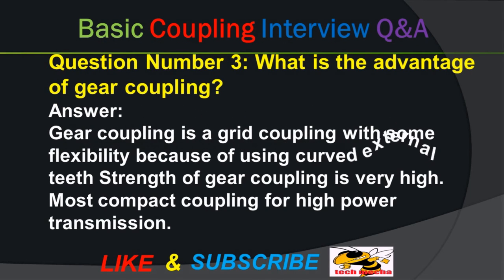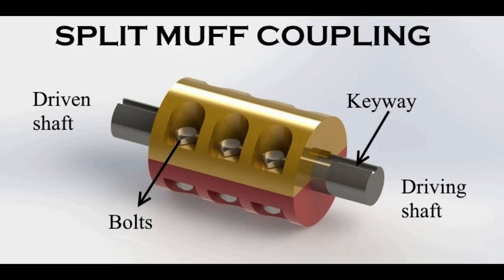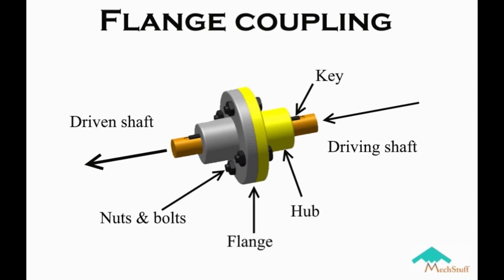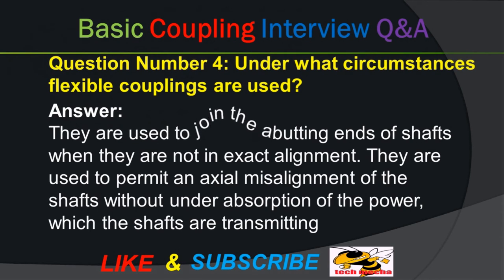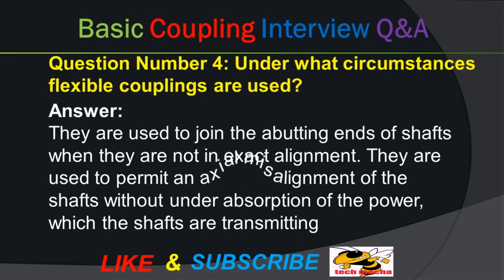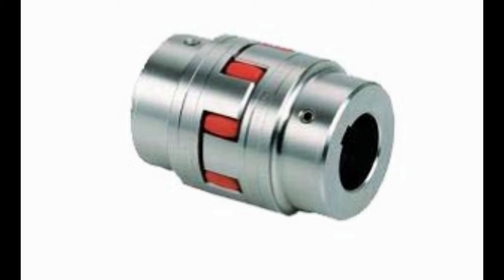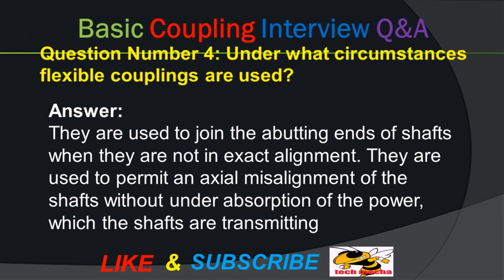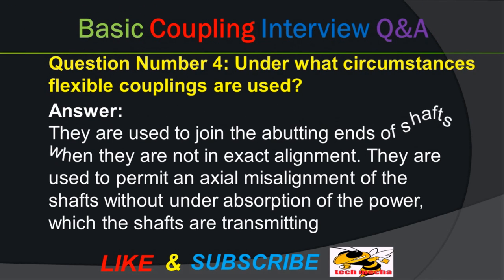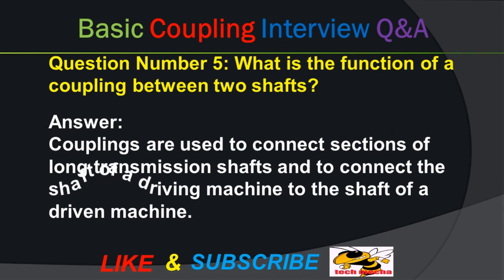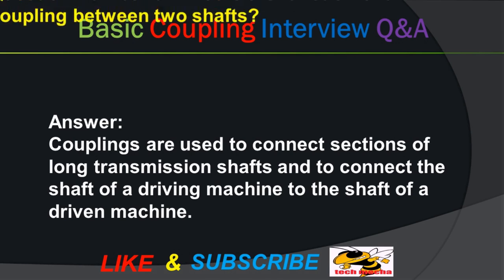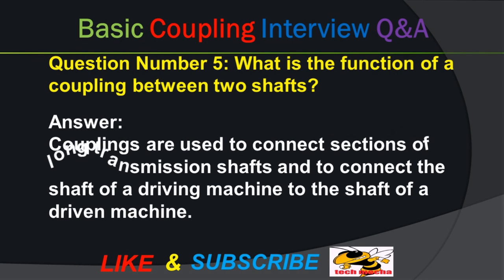Question number 3: What is the advantage of gear coupling? Answer: Gear coupling is a grid coupling with some flexibility because of using curved external teeth. The strength of gear coupling is very high, and it is the most compact coupling for high power transmission. Question number 4: Under what circumstances are flexible couplings used? Answer: They are used to join the abutting ends of shafts when they are not in exact alignment, and to permit axial misalignment of the shafts without undue absorption of the power being transmitted. Question number 5: What is the function of a coupling between two shafts? Answer: Couplings are used to connect sections of long transmission shafts and to connect the shaft of a driving machine to the shaft of a driven machine.